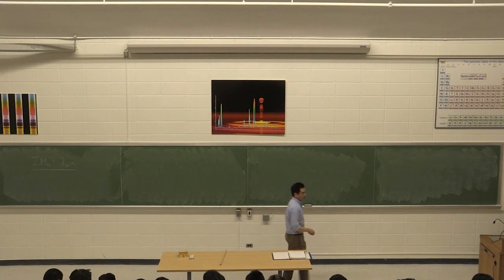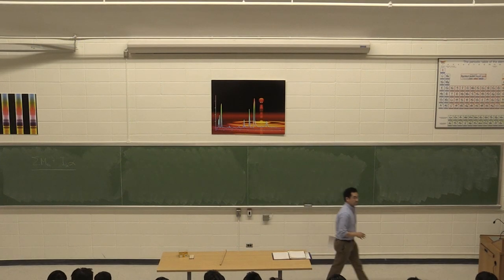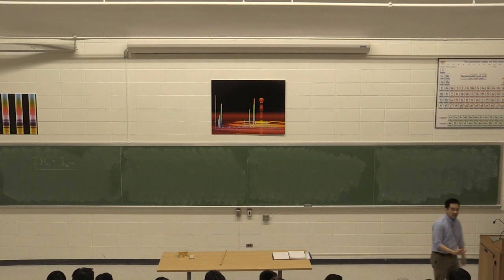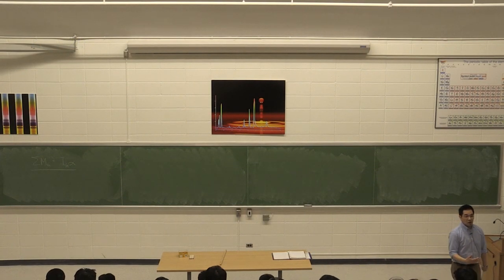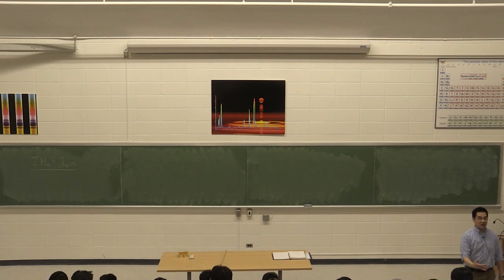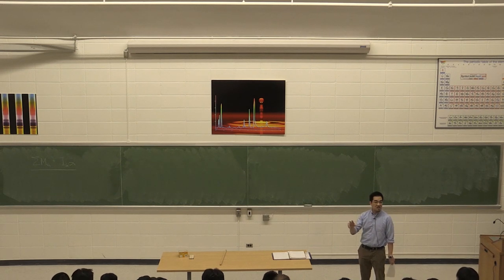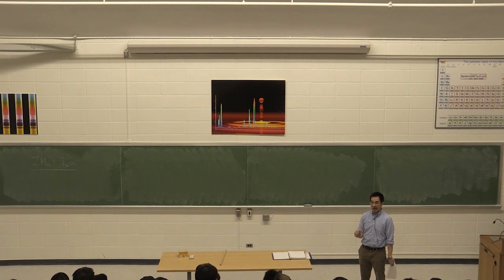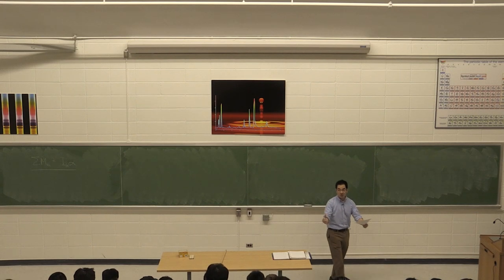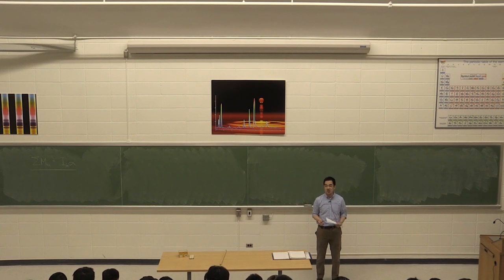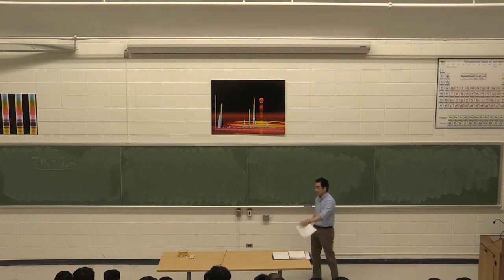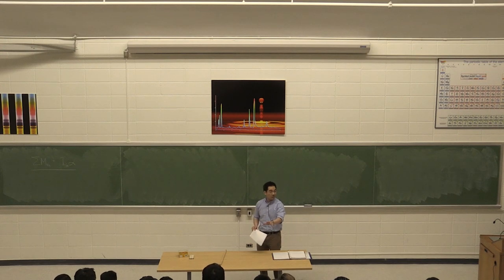Back to regularly scheduled programming. Chapter 17. I just introduced the idea that we're going to start talking about the kinetics of 2D rigid body motion. I introduced the governing equations that will allow us to solve these problems. We did F is equal to ma.